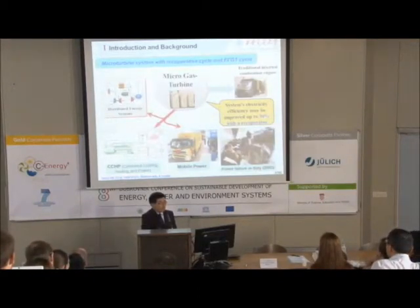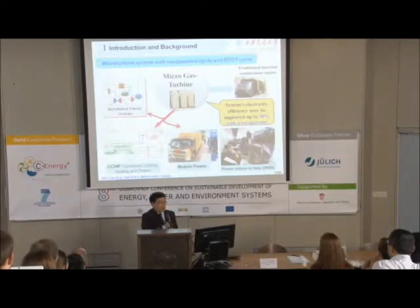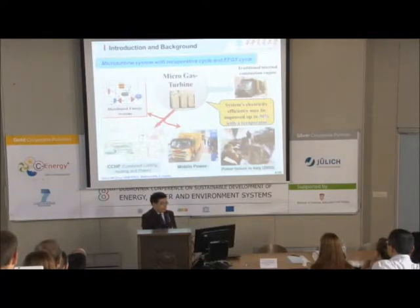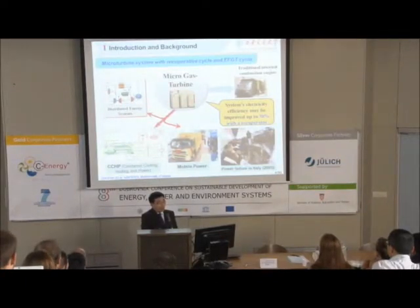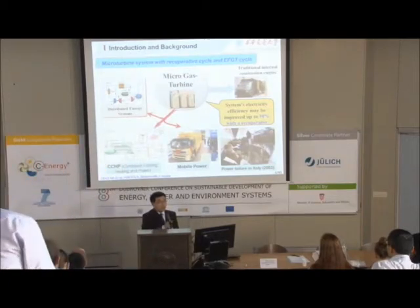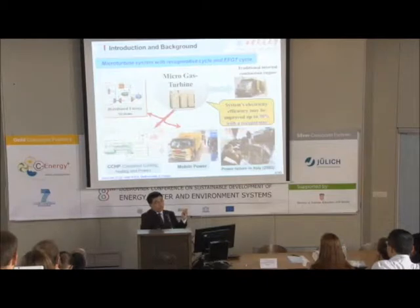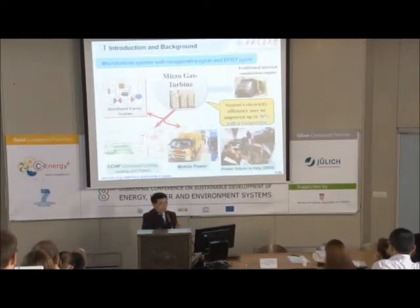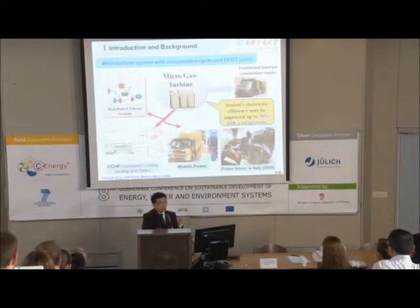Another example is the micro gas turbine system, which is very important for distributed energy systems, CCHP, and mobile power applications. In this kind of system, a recuperator — a heat exchanger that transfers heat from exhaust gas to compressed air — can improve electricity efficiency up to 30%, whereas without a recuperator efficiency is less than 20%.